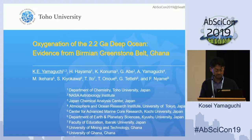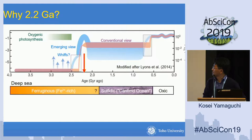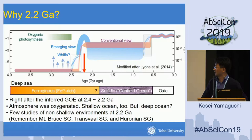Why are we interested in 2.2 GA, the period of 2.2 billion years ago? This figure is from Lyons et al. 2014, which has been frequently used in this kind of talk. 2.2 GA is just after the rise of oxygen in the atmosphere — the GOE, Great Oxidation Event — at around 2.4 to 2.2 GA. By that time, the atmosphere could have been oxygenated, and the shallow ocean too.